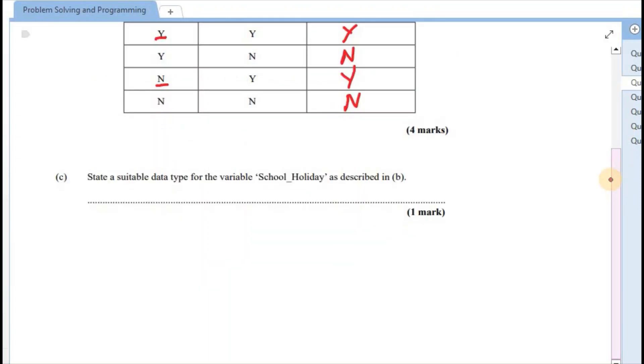Question part C says to state a suitable data type for the variable school holiday as described. The fact that we have a Y and an N, that would also match back to true or false. So the data type for true or false would have been a boolean.